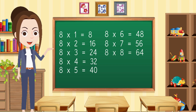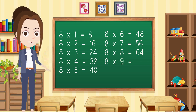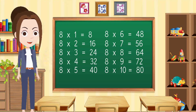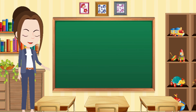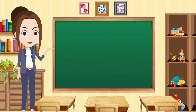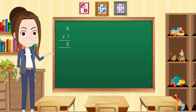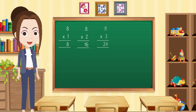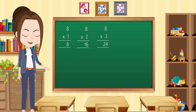Eight eights are sixty-four. Eight nines are seventy-two. Eight tens are eighty. Now we will learn the multiples of 8: 8×1=8, 8×2=16, 8×3=24.